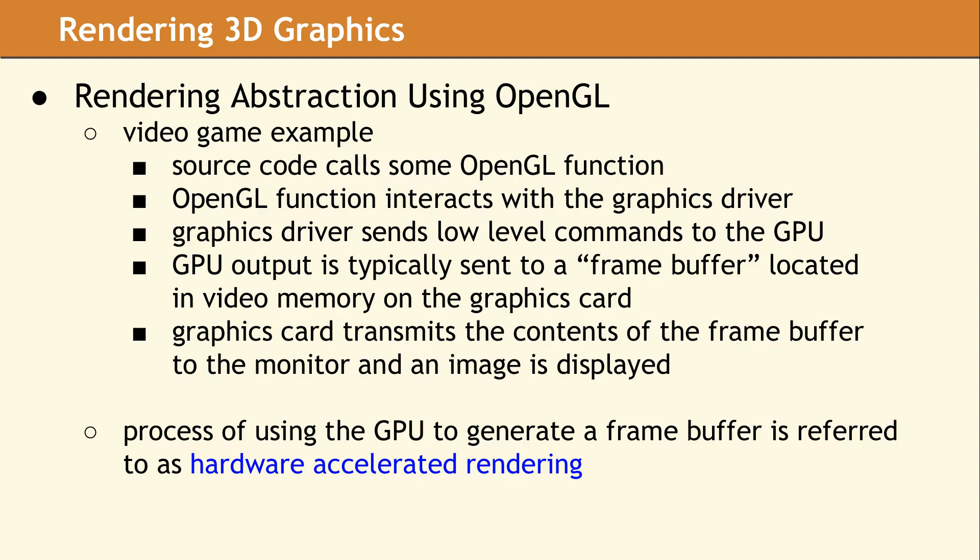This is an overview of what occurs internally when a video game uses the OpenGL API to render graphics to the screen. The source code in the game calls functions which are part of the OpenGL interface. The OpenGL implementation selects a specific graphics driver based on the available hardware. The driver then generates low-level commands which are transmitted to the GPU. After these commands are executed on the GPU, the results are placed in a frame buffer in video memory. The graphics card then transmits the contents of the frame buffer to the monitor, and the image appears on the screen. This process is called hardware-accelerated rendering.